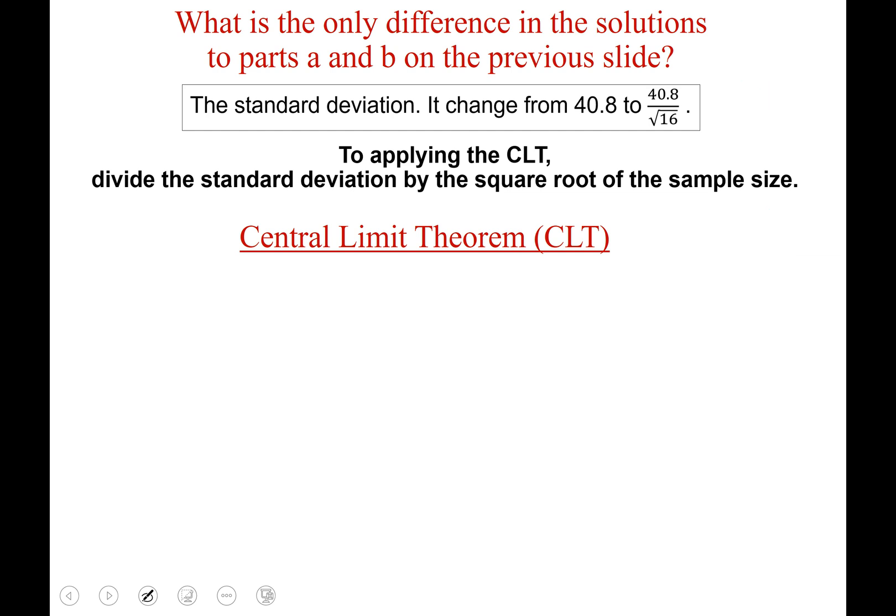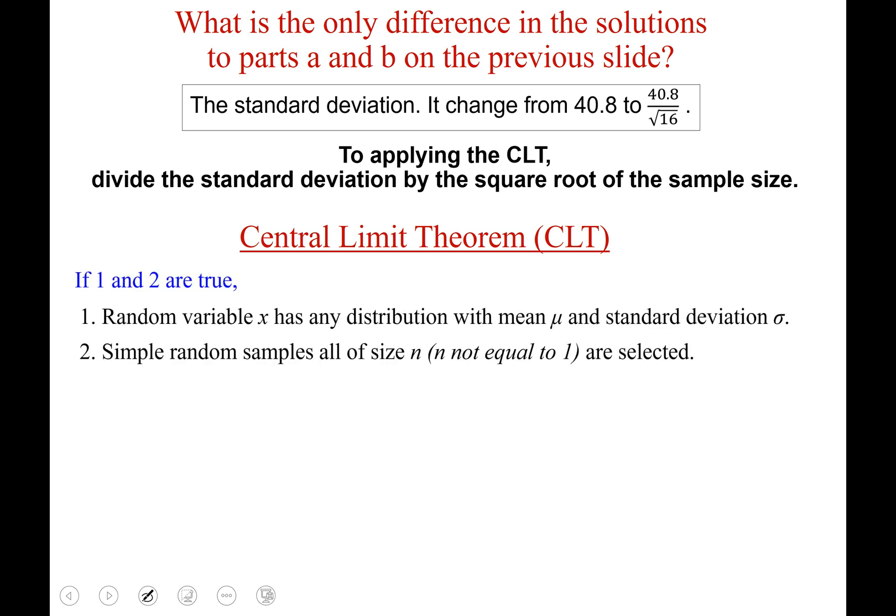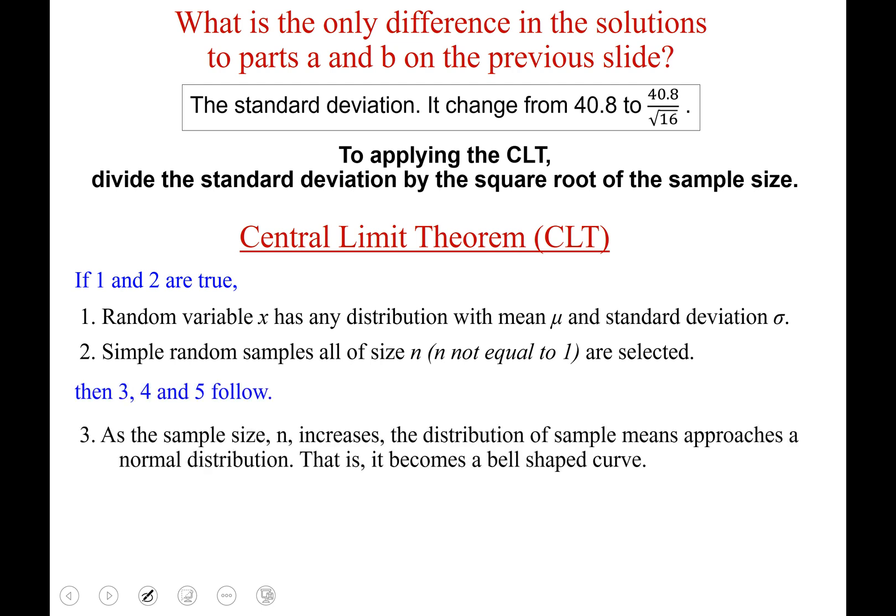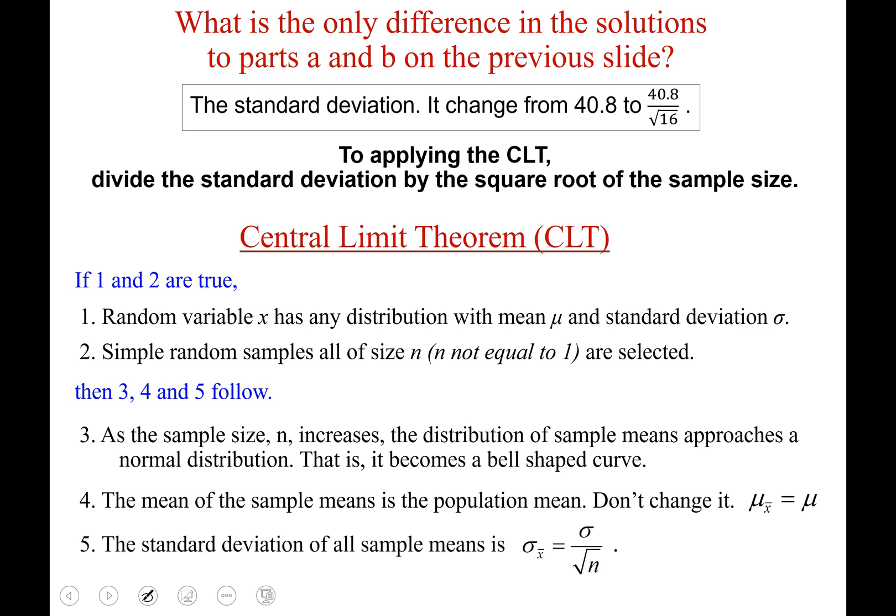Okay here is the central limit theorem in its general form. If one and two are true, number one being random variable x has any distribution with a mean of mu, standard deviation of sigma, and two, simple random samples all of size n and not equal to one are selected, then three four and five also follow as true. Number three, as the sample size n increases the distribution of sample means approaches a normal distribution. All that means is that it starts to become a bell-shaped curve. Four, the mean of the sample means is the population mean, so don't change mu. Mu sub x bar is the same as mu. And five, the standard deviation of all sample means is sigma divided by the square root of n. So that's where your adjustment in the calculations takes place.